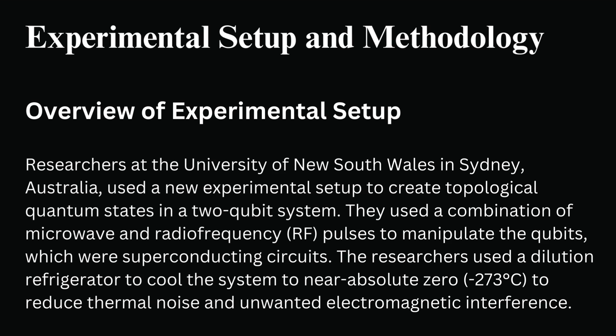Experimental Setup and Methodology. Researchers at the University of New South Wales in Sydney, Australia, used a new experimental setup to create topological quantum states in a two-qubit system. They used a combination of microwave and radio frequency (RF) pulses to manipulate the qubits, which were superconducting circuits. The researchers used a dilution refrigerator to cool the system to near absolute zero — minus 273 degrees Celsius — to reduce thermal noise and unwanted electromagnetic interference.